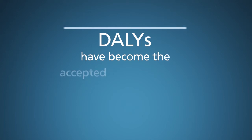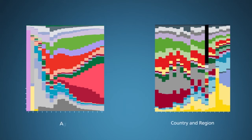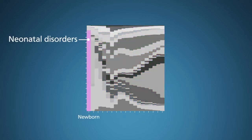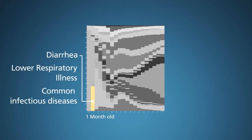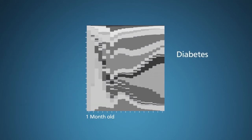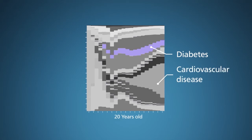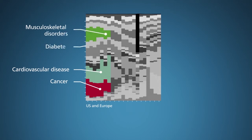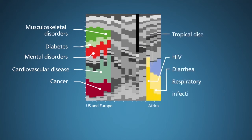Since their introduction, DALYs have become the accepted way to quantify global disease burden, allowing observers to compare and evaluate disease data as grouped by country and region, age and gender, type of disease, and more. For example, here you can see the distribution of DALYs by disease and age. In newborns, most DALYs are due to neonatal disorders. For one-month-olds, diarrhea, lower respiratory illness, and other common infectious diseases cause the greatest burden. Diabetes extracts a steady toll starting in the 20s, and cardiovascular disease takes off quickly from age 30. Similarly, in this graph, you can see how disease burden varies by geographic region. On the left are wealthier countries with the largest burden from cardiovascular disease and cancer, and secondarily from musculoskeletal disorders, diabetes, and mental disorders. On the far right are African regions with the highest burden from HIV, diarrhea, respiratory infection, tropical diseases, and neonatal disorders.